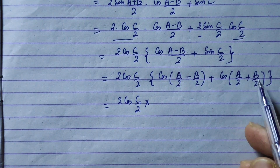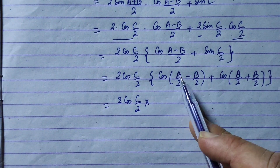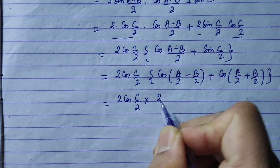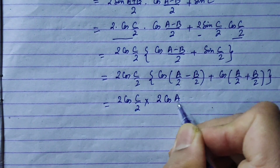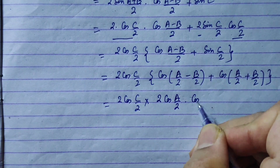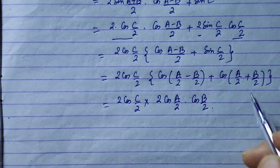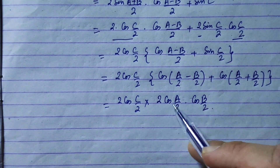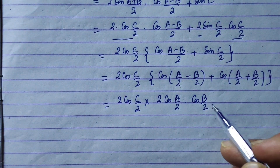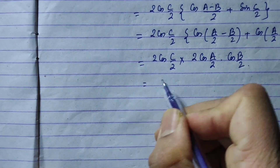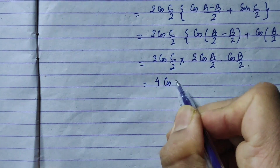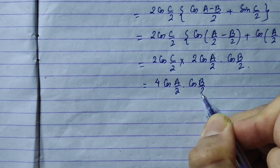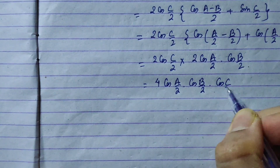Applying the product-to-sum formula: cos(a/2 + b/2) + cos(a/2 − b/2) = 2·cos(a/2)·cos(b/2). This allows us to combine the terms in the denominator.